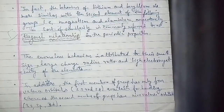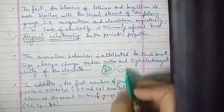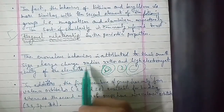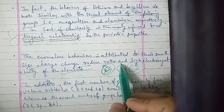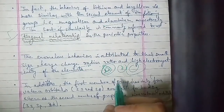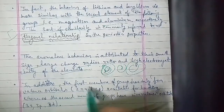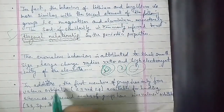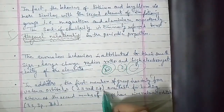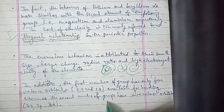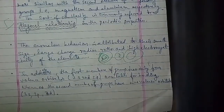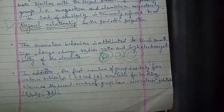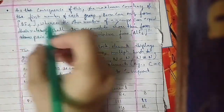The anomalous behavior is based on the small size of the element, the large charge-to-radius ratio, and high electronegativity compared to subsequent members. In addition, the first member of each group has only four valence orbitals — 2s and 2p — available for bonding, whereas the second member of the group has nine valence orbitals — 3s, 3p, and 3d — available for bonding.